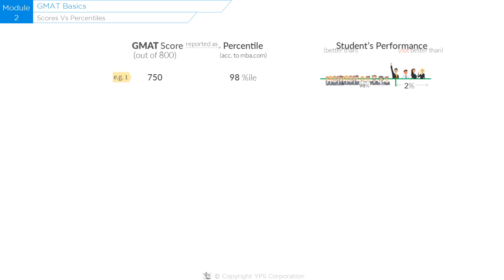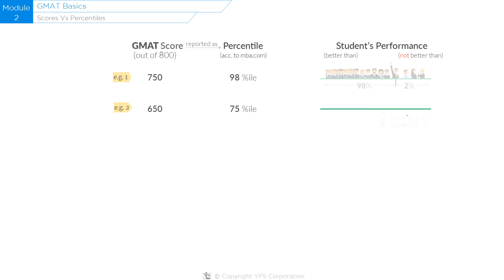Let's take one more example. Let's say another student scored 650. According to MBA.com, 650 corresponds to a 75th percentile ranking. This implies that 25% of people who took the GMAT did better than this student, or in other words, this student did better than 75% of people who took the GMAT.